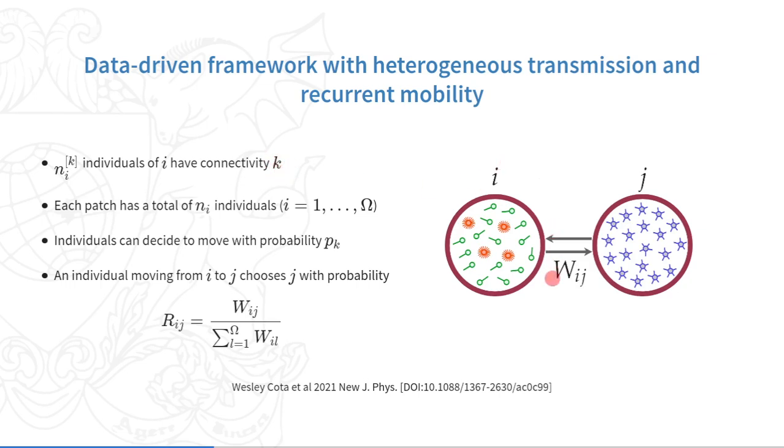In this figure, for example, we have one very heterogeneous patch and a homogeneous one. With probability p_k, residents in patch i can visit j chosen proportionally to the origin-destination matrix elements.